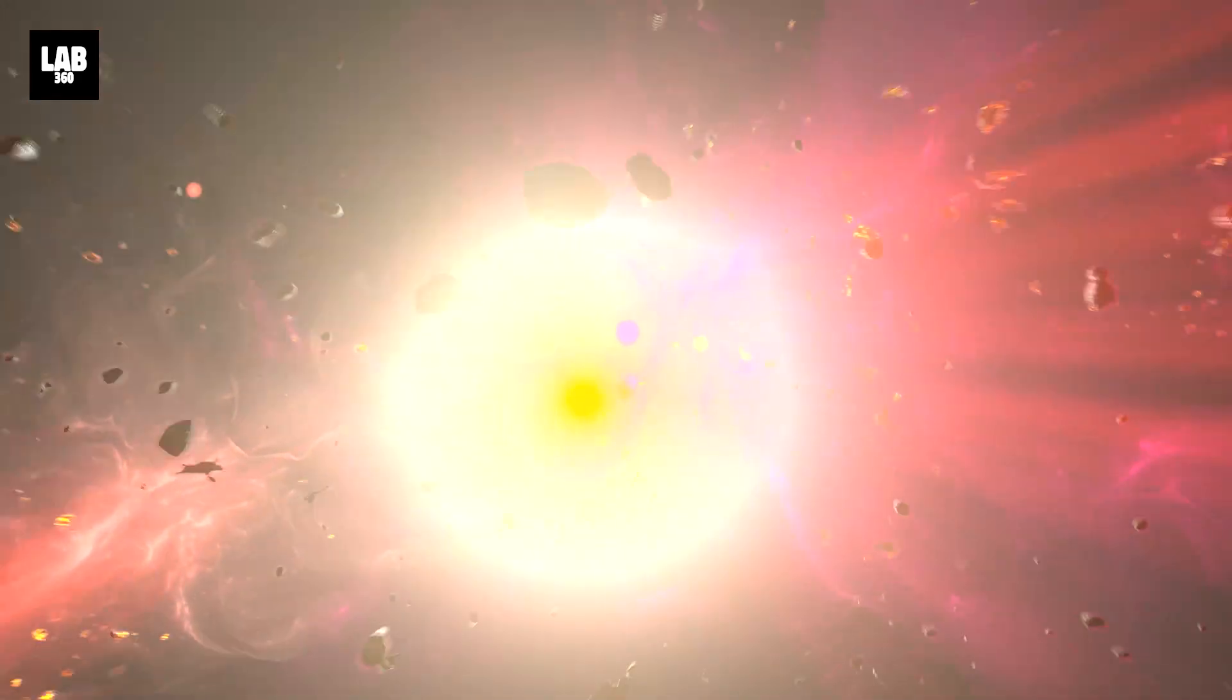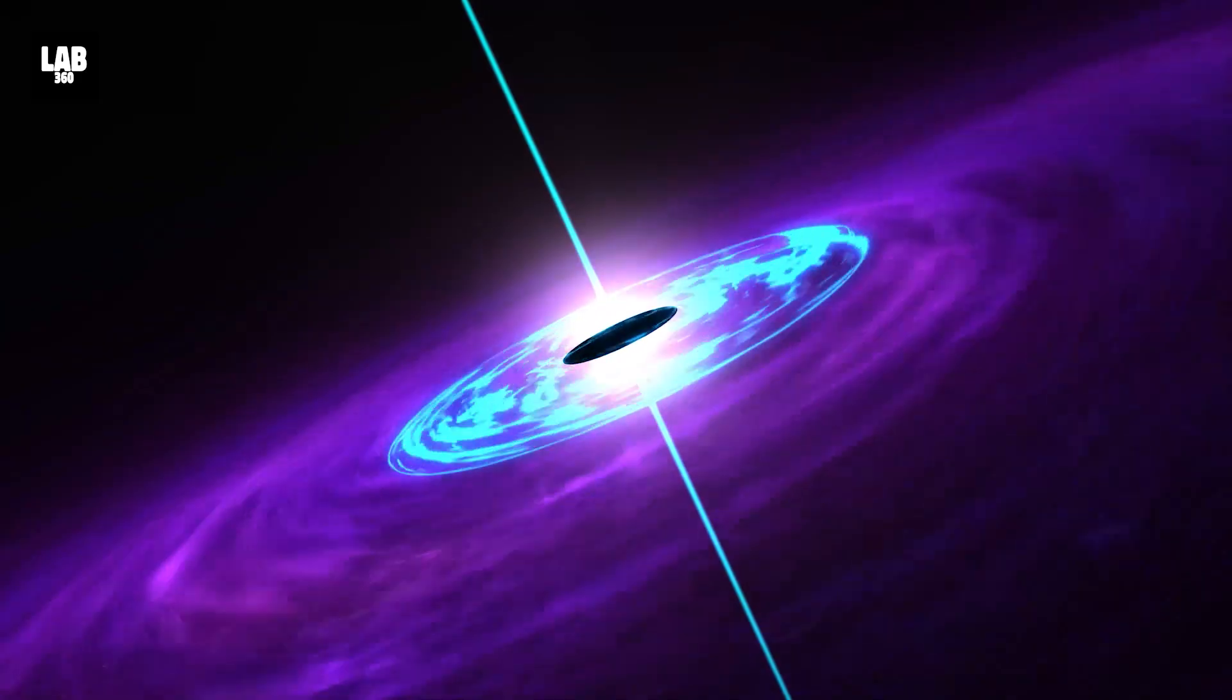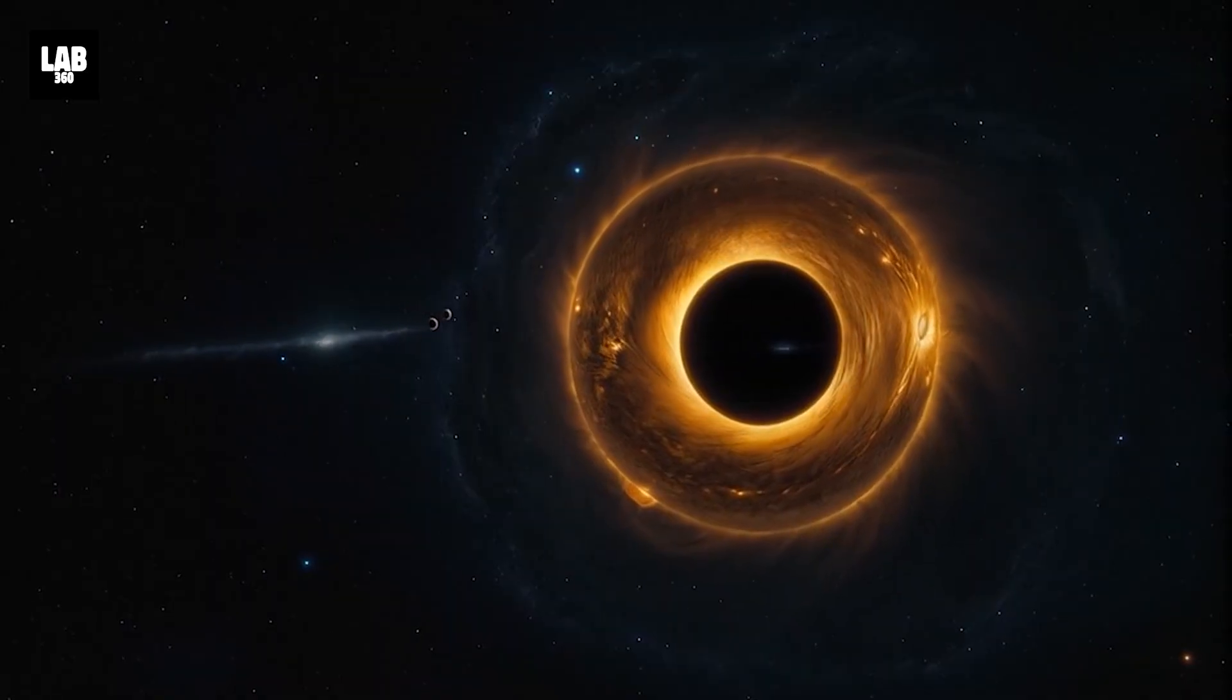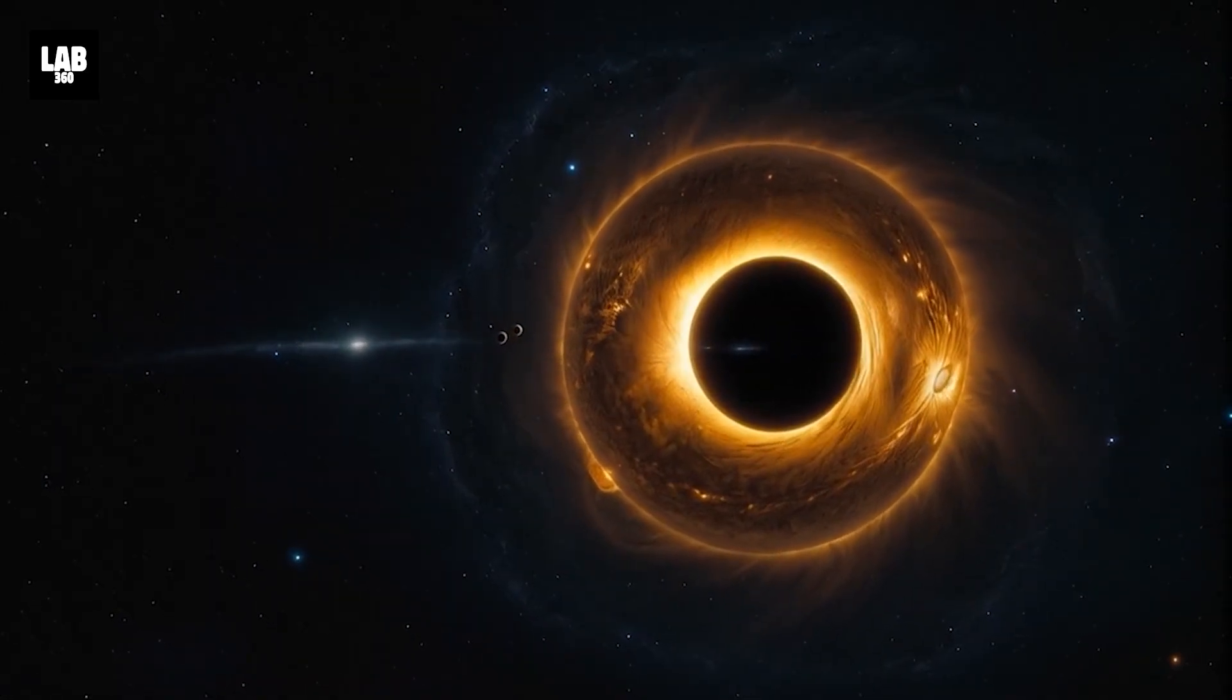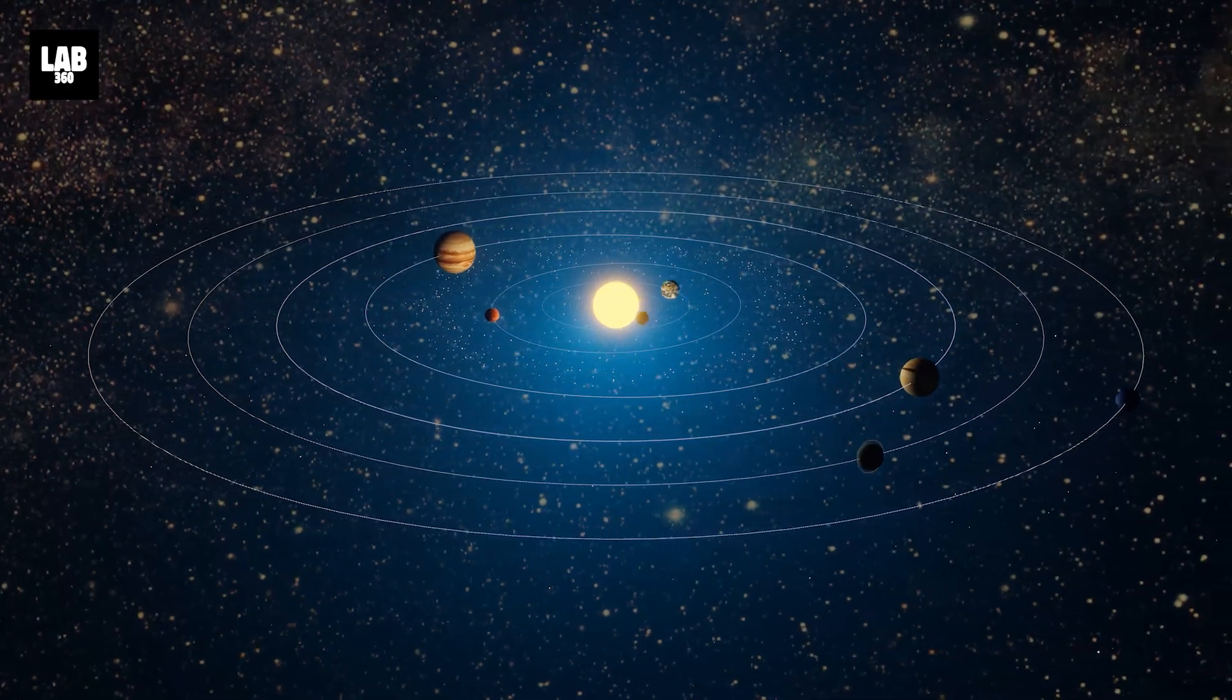The key difference, however, is that the Sun's gravitational field would now be concentrated in a point at the center of the black hole. For the planets, this means that they would continue to orbit this point of intense gravity, exactly as they do around the current Sun.